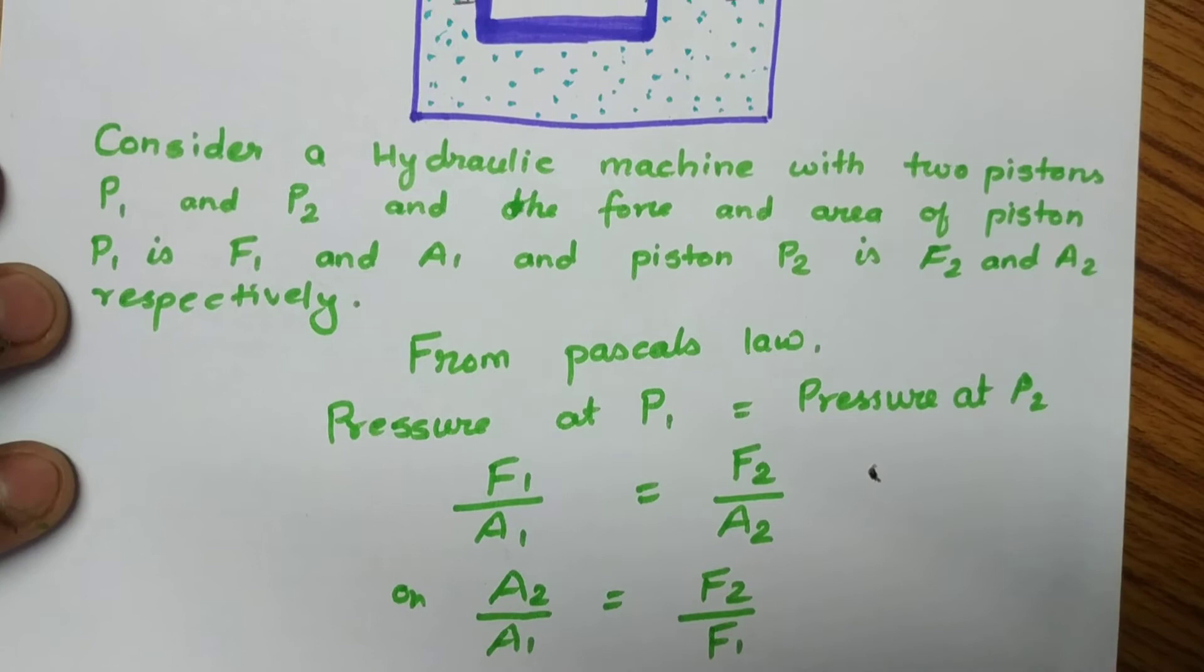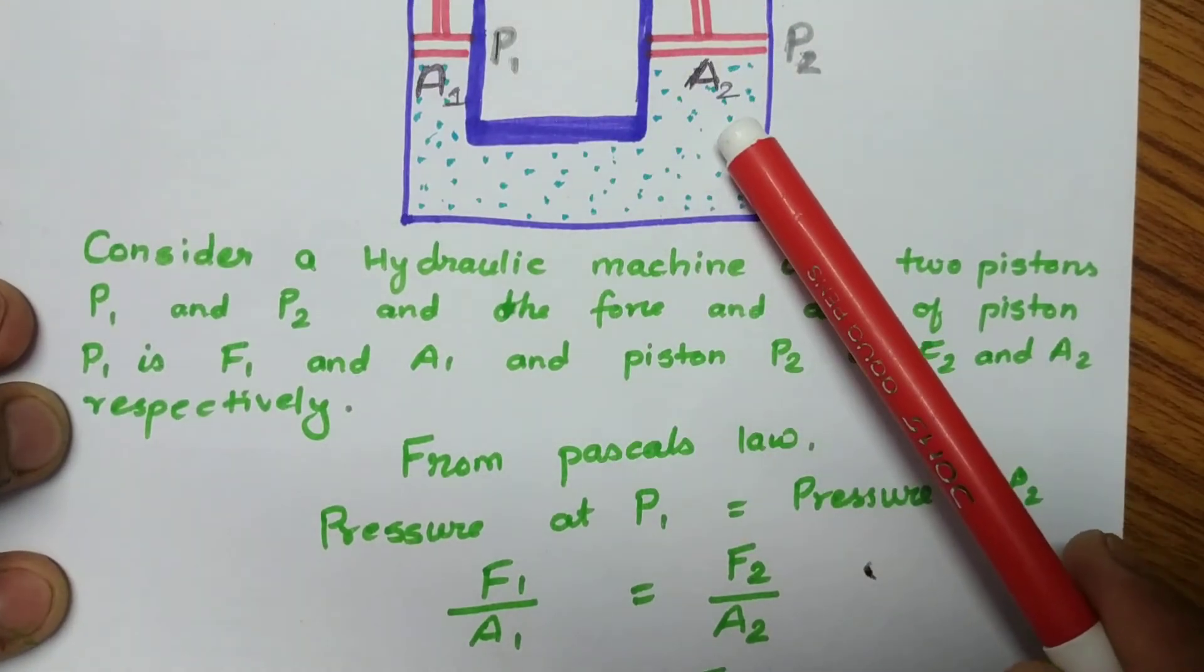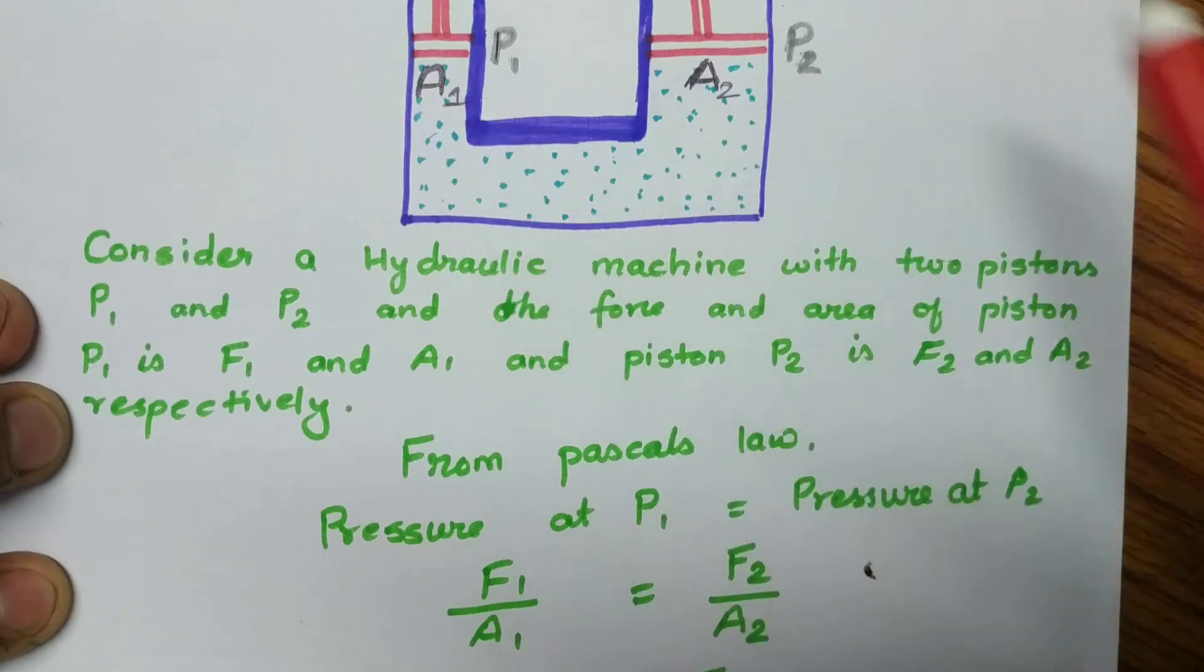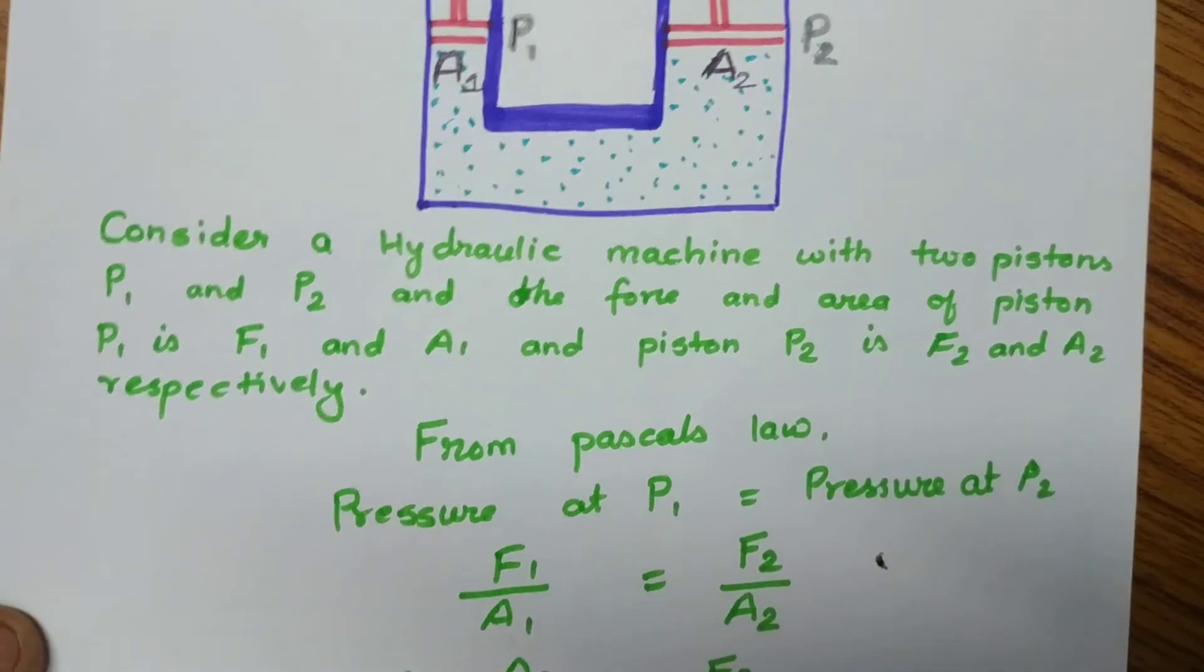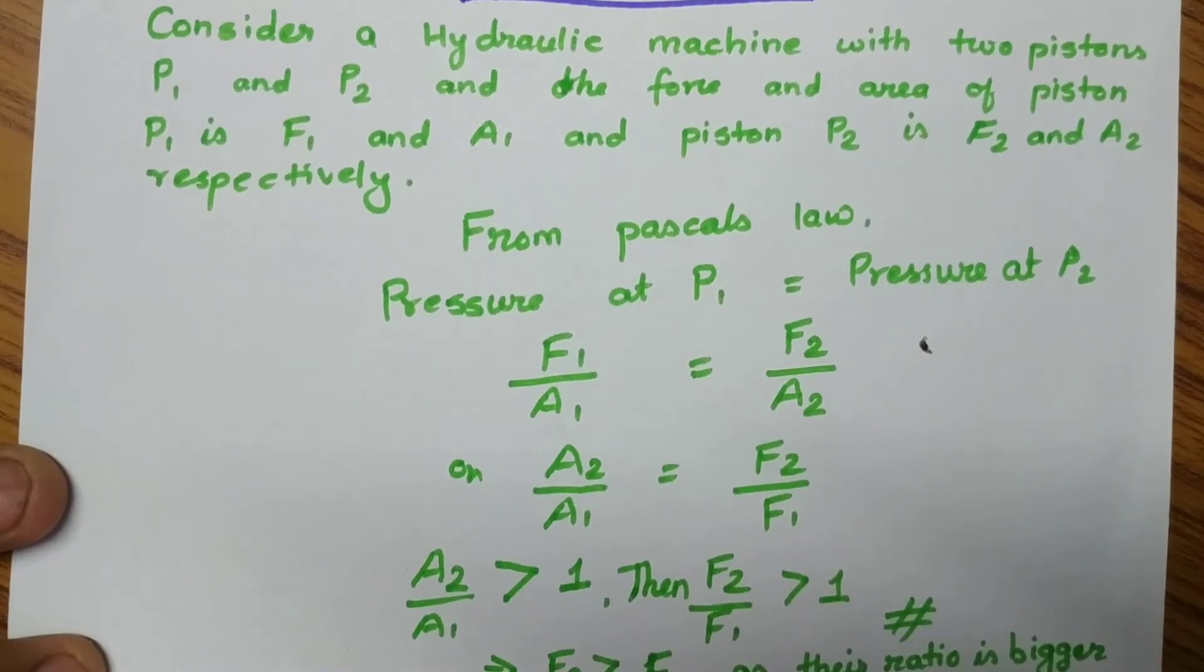As I told you in the beginning, the area A2 is quite larger than area A1. So we can say that if you take their ratio - A2 by A1 - it comes greater than 1.